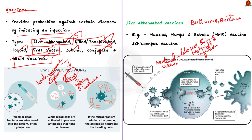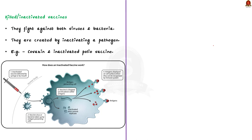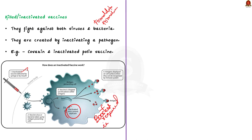Killed or inactivated vaccines can also fight against both bacteria and viruses. They are created by inactivating a pathogen, typically using heat or chemicals like formaldehyde or formalin. This process destroys the pathogen's ability to replicate but keeps it intact, so the immune system can still recognize it and develop antibodies. However, inactivated vaccines tend to provide shorter protection than live vaccines and are more likely to require boosters for long-term immunity. Covaxin and inactivated polio vaccines are examples of inactivated vaccines.